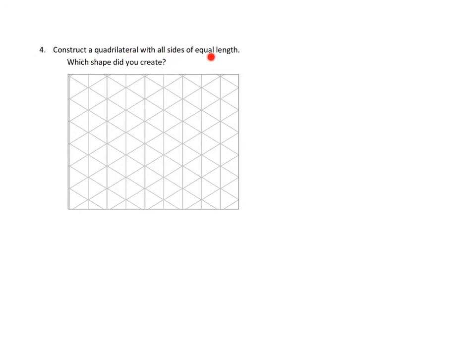Now we've got the triangle graph paper for number four, and we are asked to construct a quadrilateral with all sides of equal length. What shape did you create? A quadrilateral with all sides of equal length. Well, let's see what we can do here.